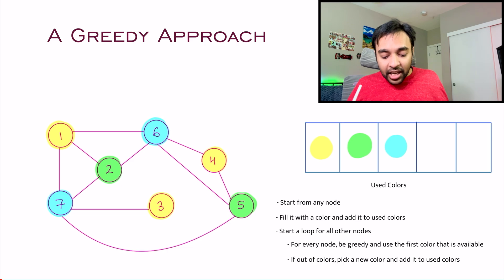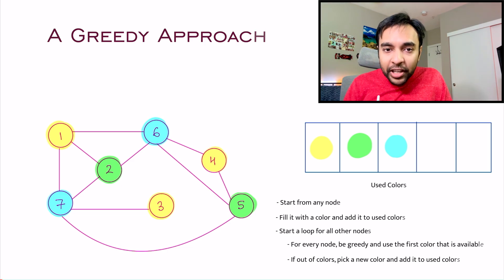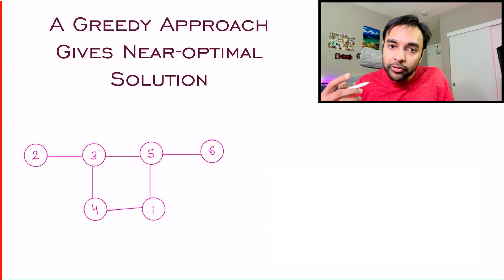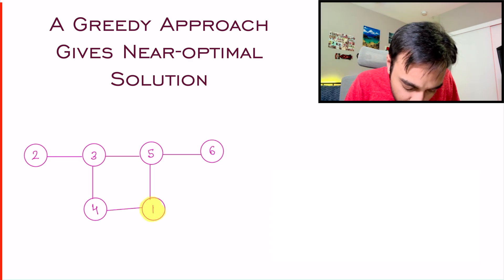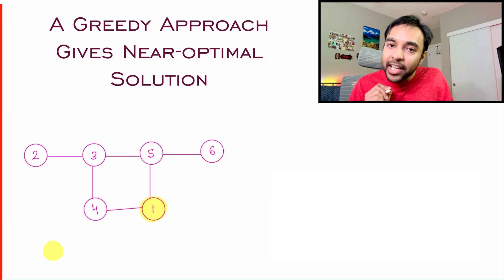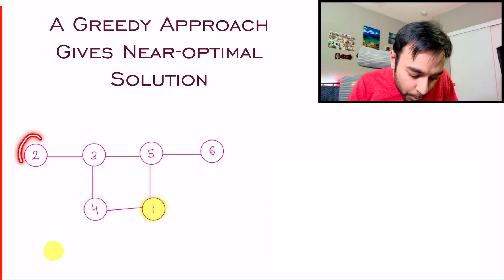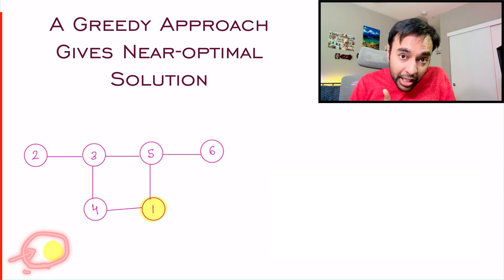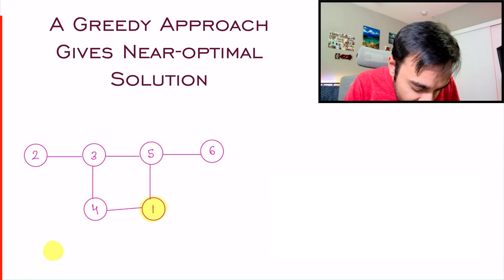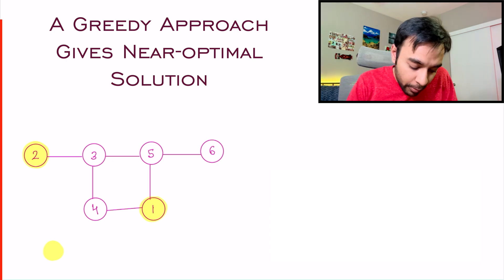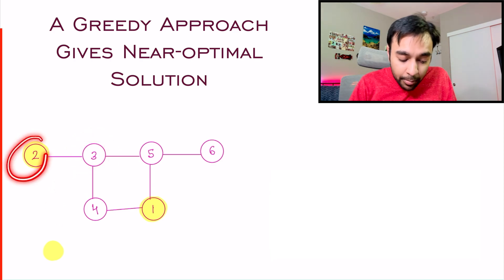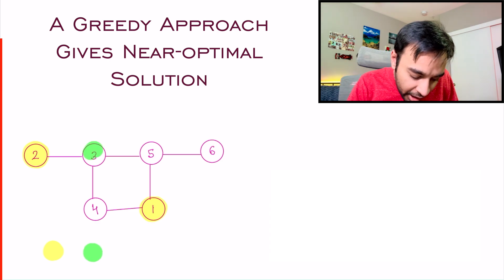An NP-hard problem is one which cannot be solved in polynomial time. You might be wondering why this greedy approach does not work — let me show you one example. Let us say I have this graph in front of me, and with a greedy approach you will start off with node number 1. I color node number 1 — let us say I have used the yellow color. Now look at node number 2: I look at my used colors array and I can use yellow, so I color this node as yellow. Look at node number 3 — can you use yellow? No, because it is already a neighbor. So I take up green and color it green.